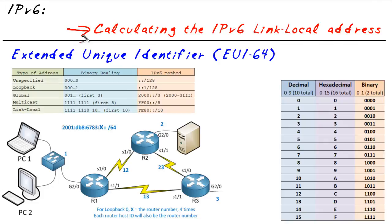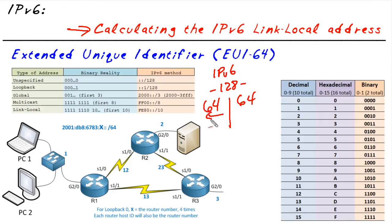Let's start off with IPv6. IPv6 uses 128 bits to represent an IP address. Part of that is the network on the left, and the other part is the host portion. In most cases we're going to have a 64-bit split — 64 bits on the left is the network, 64 bits on the right is the host.